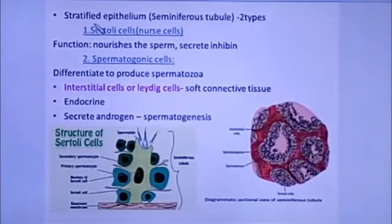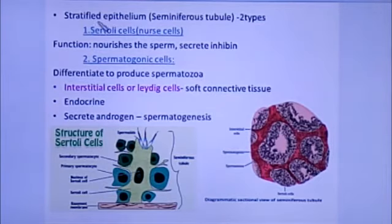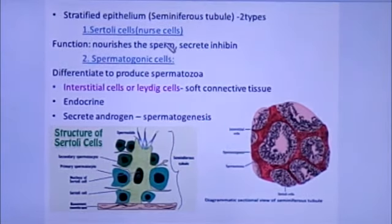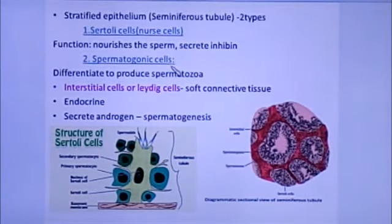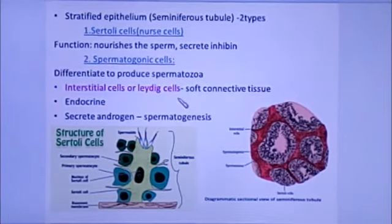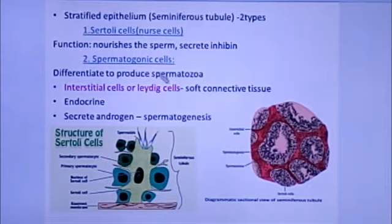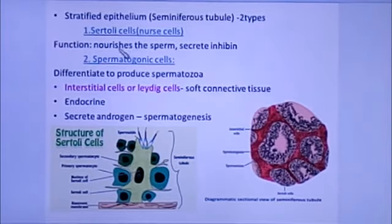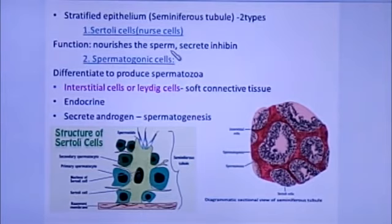The seminiferous tubule contains stratified epithelium. There are two types of cells: Sertoli cells, otherwise called nurse cells, and spermatogonic cells. The seminiferous tubule is also made up of interstitial cells or Leydig cells. Sertoli cells nourish the developing sperm and also secrete inhibin, which is involved in the negative feedback control of sperm production — when the sperm count is too high, inhibin is secreted to control sperm production.